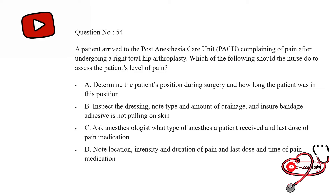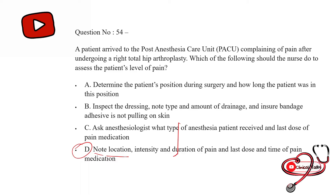A patient arrived at the post-anesthesia care unit complaining of pain after undergoing a right total hip arthroplasty. Which of the following should the nurse do to assess the patient's level of pain? Option first: determine the patient's position during surgery and how long the patient was in that position; second: inspect the dressing, note type and amount of drainage, and ensure the bandage adhesive is not pulling on the skin; third: ask the anesthesiologist what type of anesthesia the patient received and the last dose of pain medications; last: note the location, intensity, and duration of the pain and the last dose and time of pain medications. The correct answer is D — note the location, intensity, duration of pain, and last dose and time of pain medications.